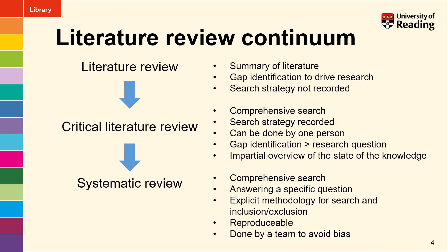A systematic review fits in on a scale of literature reviews. Going from the most basic literature review — the sort that would be done to support a lab-based project — would be a summary of the literature, maybe searching one or two databases to find that literature. It's used to identify gaps in the current knowledge to drive research, and with this type of literature review the search strategy does not need to be recorded.